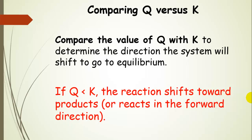Now, if Q is smaller than the equilibrium constant value, so in other words, Q is less than K, then the reaction is going to shift toward products. That's basically reacting in the forward direction.